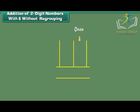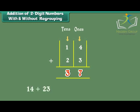The digits at the 1s place are 4 and 3. 4 plus 3 is equal to 7. The digits at the 10s place are 1 and 2. 1 plus 2 is equal to 3. Therefore, 14 plus 23 is equal to 37.